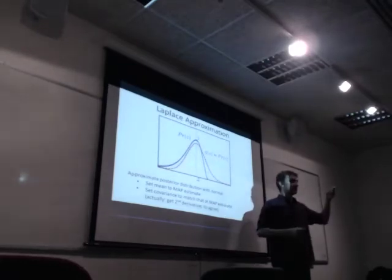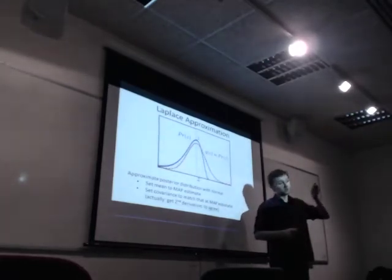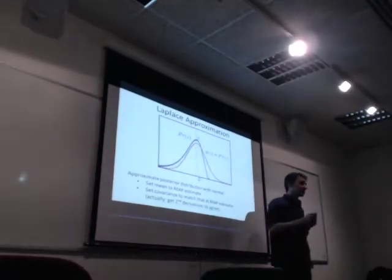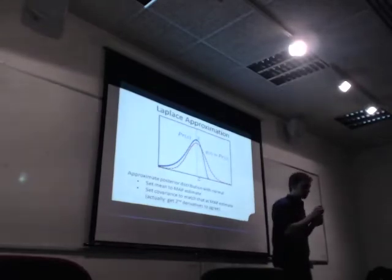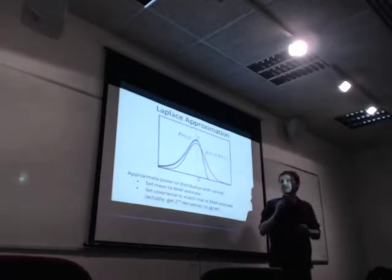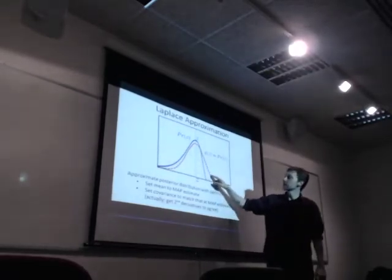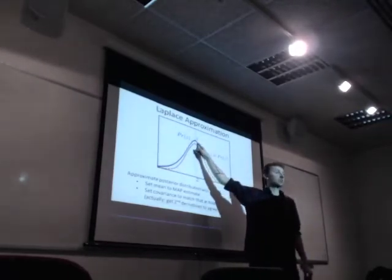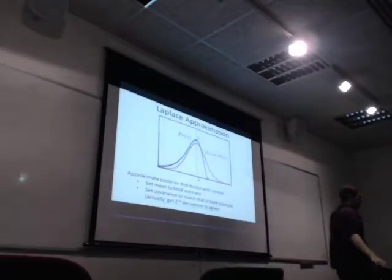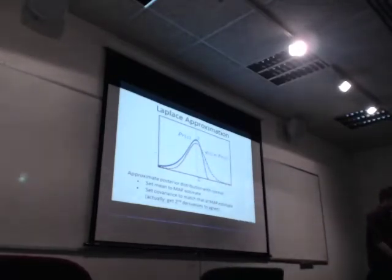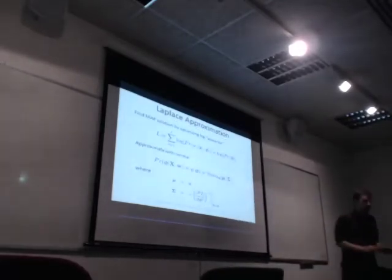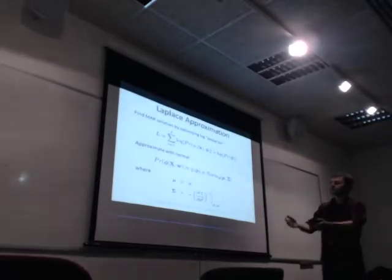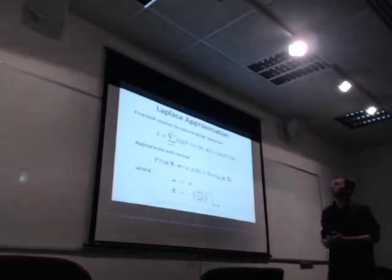This is our Laplace approximation, and we're going to be using it here and again in the sparse dual representation when we get there. When we take the log — we had our likelihood and our prior multiplied together, you take the log, now they're added together.